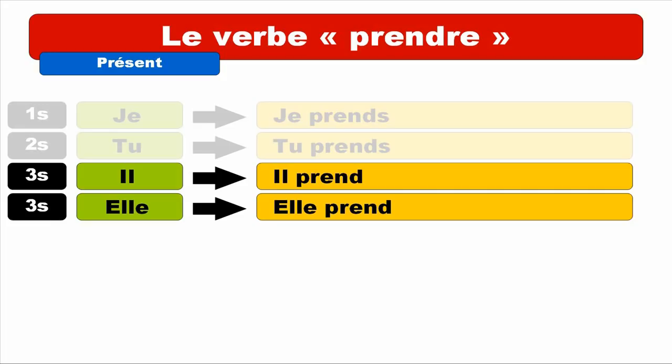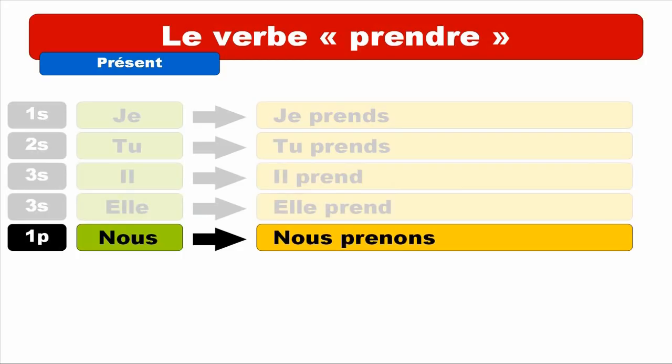Let's have a look now at NOUS — first person of the plural. It's NOUS PRENONS. Keep in mind that E is pronounced like E — PR, PRENONS. Repeat. NOUS PRENONS. Second person — VOUS. We get VOUS PRENEZ. Repeat. VOUS PRENEZ.